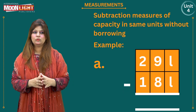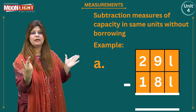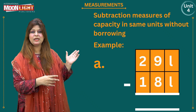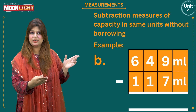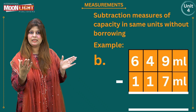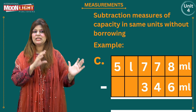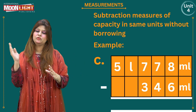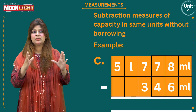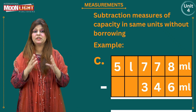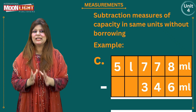Right now we are going to do one interesting example. I have taken three parts: the first part is of two-digit numbers with capacity units, the second part is of three-digit numbers with capacity units, and the third part is a mix of litres and millilitres with four digits. You are going to recall your previously learned concepts.